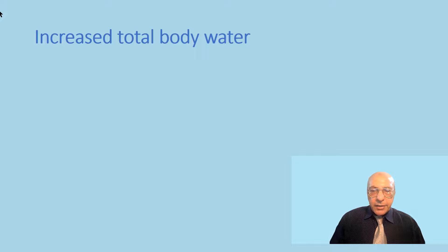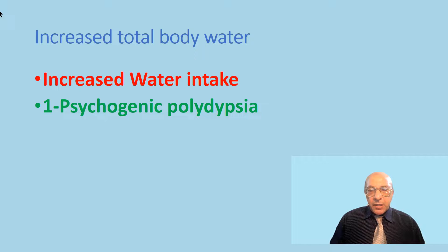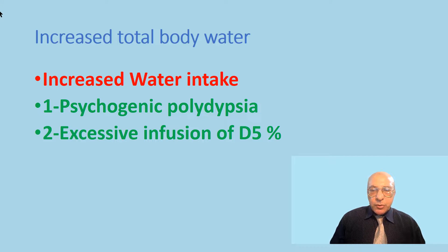The third group is an increase of total body water due to increased intake, which can occur orally in patients with psychogenic polydipsia with excessive intake of water, which will overpower the renal capacity for secretion, resulting in increased total body water, or via intravenous infusion of excess amounts of dextrose in admitted patients, which will also result in increased total body water.